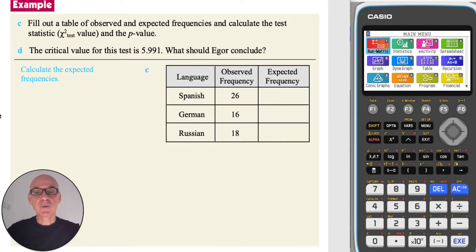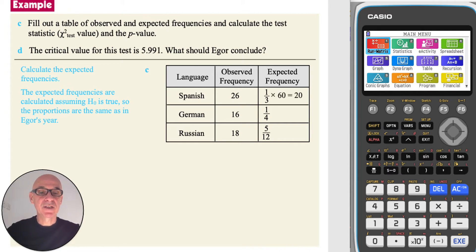In part C, we're asked to calculate the expected frequencies and then to calculate the test statistic and the p-value. The expected frequencies are calculated assuming the null hypothesis H₀ is true, assuming that the proportions will be the same as those in Igor's year. And as the sample size was 60: one-third of 60 is 20, one-quarter of 60 is 15, and five-twelfths of 60 is 25.